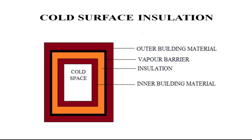In a cold store, the construction layers from inside out are: inner building material, then insulation, then vapor barrier, then outer building material. The red color represents masonry structure (brick work, cement, RCC); the orange colored material is insulation; and the black colored material is the vapor barrier. Both kinds of materials have already been explained.